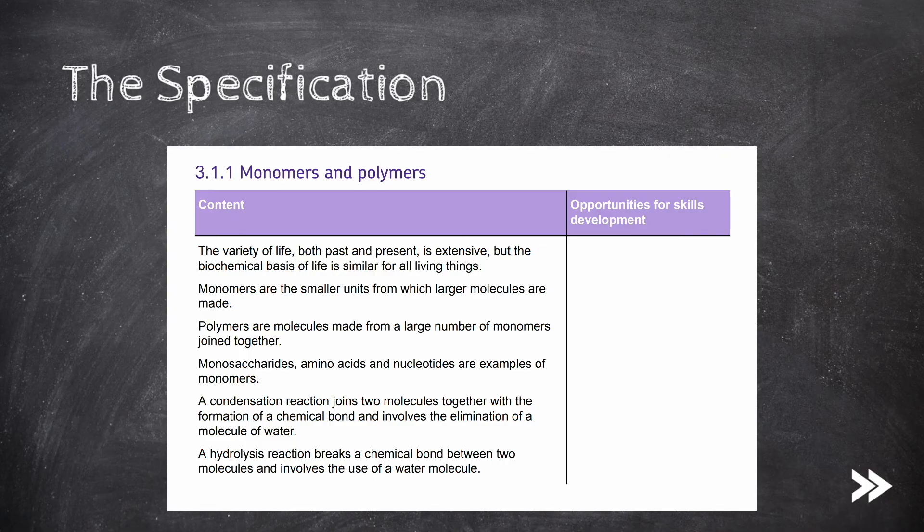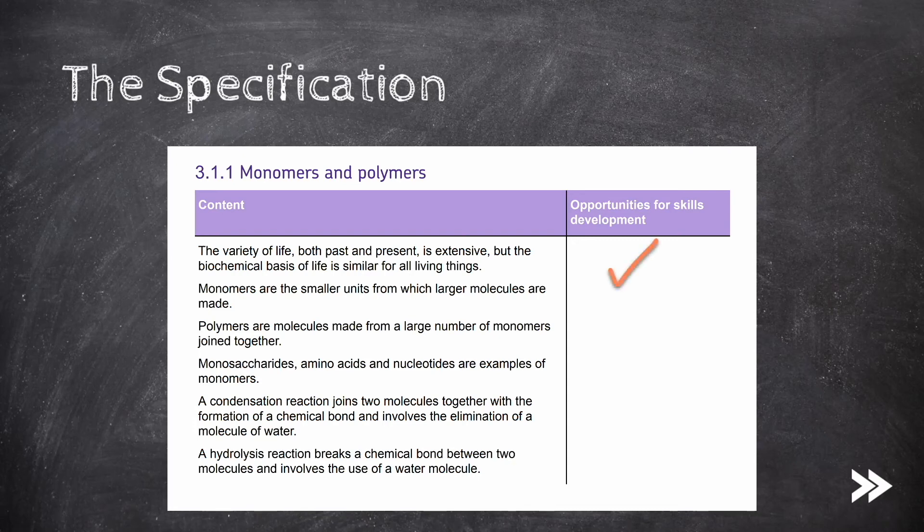We know that the variety of life, both past and present, is extensive, but the biochemical basis of life is similar for all living things. We have defined monomers and polymers, and know some examples of monomers.